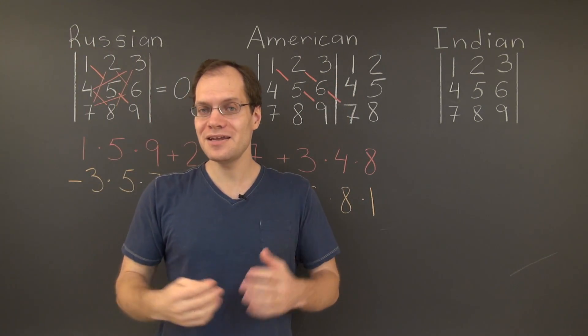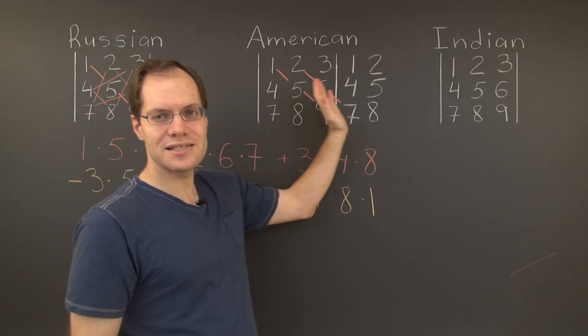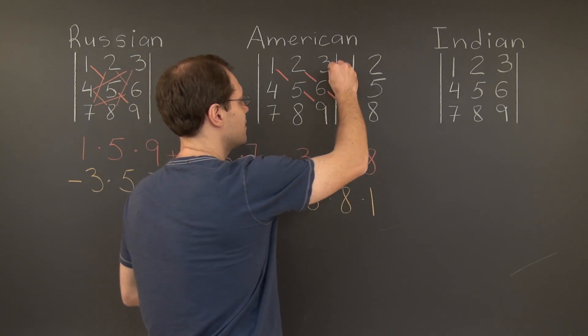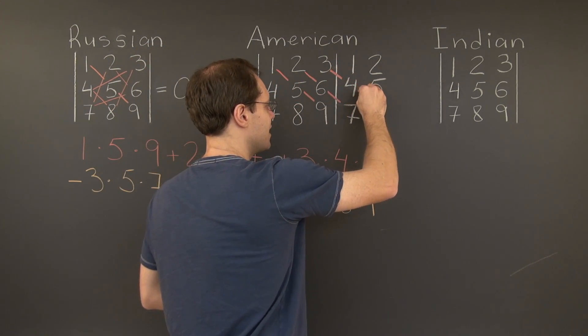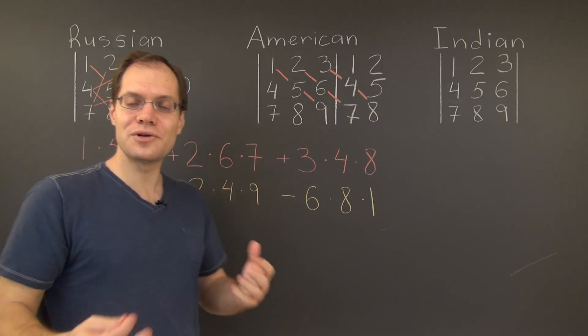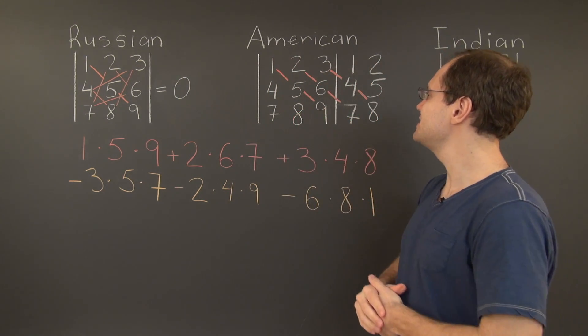And the remaining positive pattern will be a straight line that starts from this entry right here, and once again goes down and to the right parallel to these two lines. It is 3, 4, 8. And here is the term right here. So the three relatively complicated patterns now became exceedingly simple.